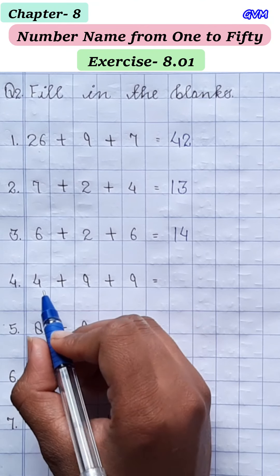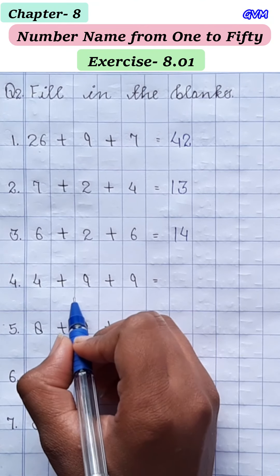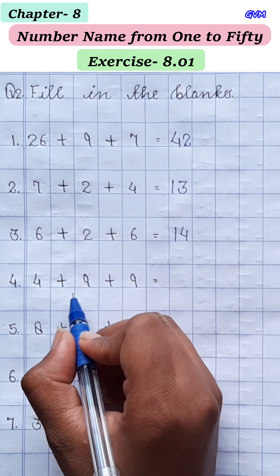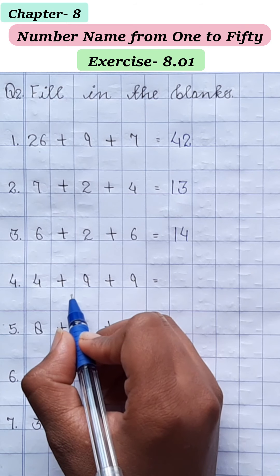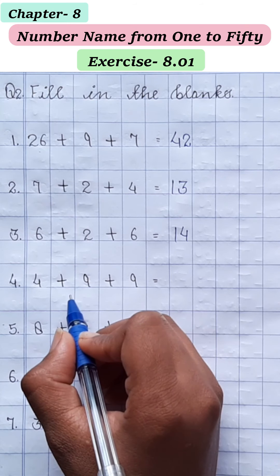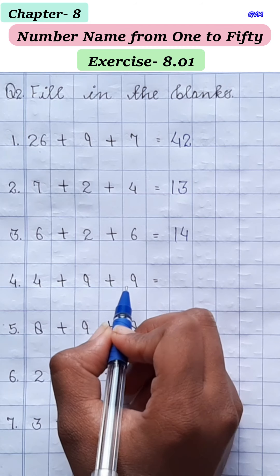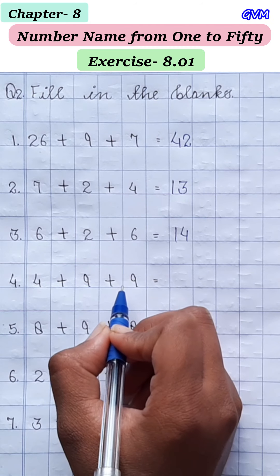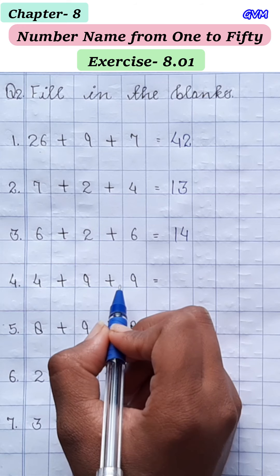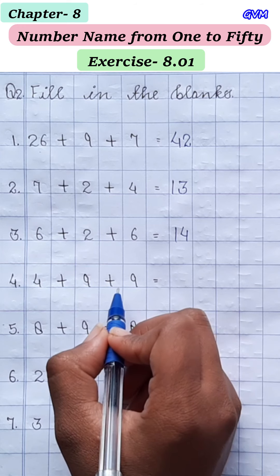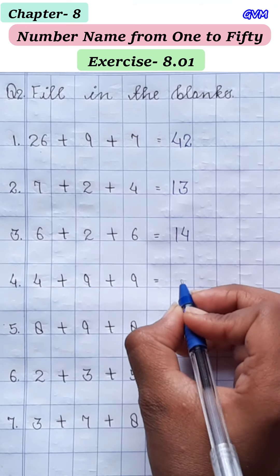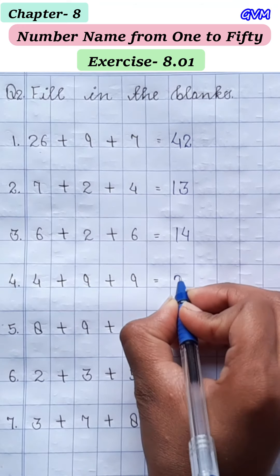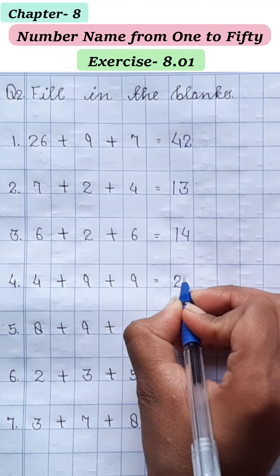4 plus 9: 4 के आगे count करेंगे — 5, 6, 7, 8, 9, 10, 11, 12, 13। Plus 9: 14, 15, 16, 17, 18, 19, 20, 21, 22। यहाँ पर 22 आगे है। 8 plus 9: 8 के आगे count करेंगे — 9, 10, 11, 12, 13, 14, 15, 16, 17। Plus 8: 18, 19, 20, 21, 22, 23, 24, 25। यहाँ पर 25 आगे है।